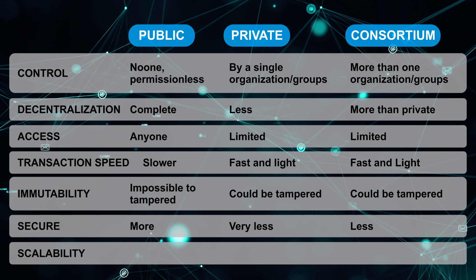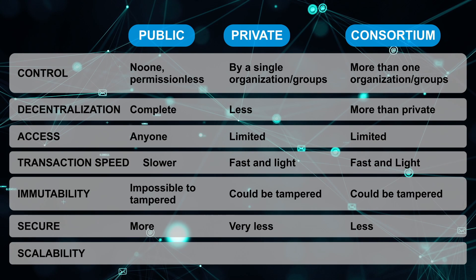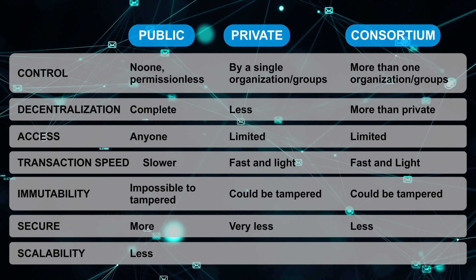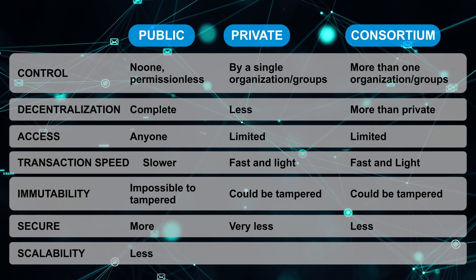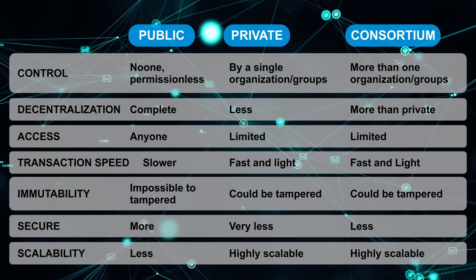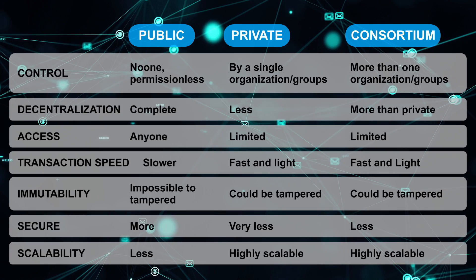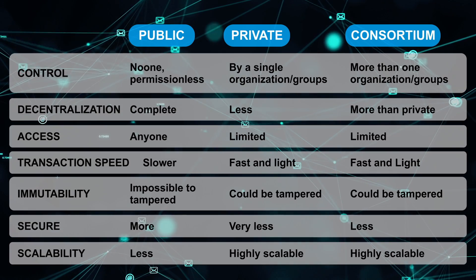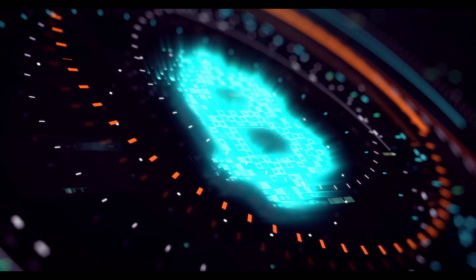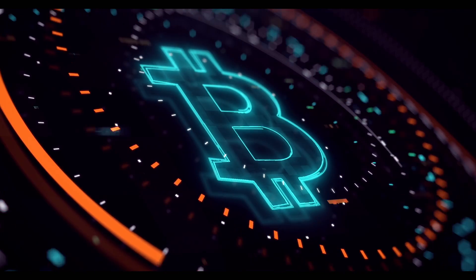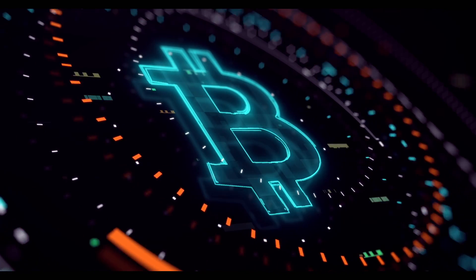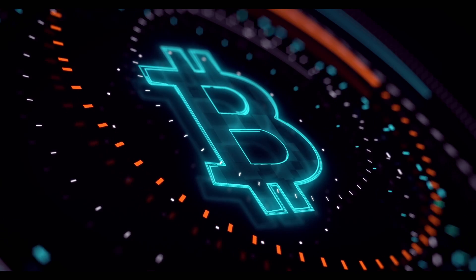The next point we have is scalability. Centralized things are more scalable than decentralized ones, so the more the decentralization, the less scalable it will be. Hence, public blockchain is less scalable than private and consortium blockchain. Regarding hybrid blockchain, it has some features of both public and private blockchain.